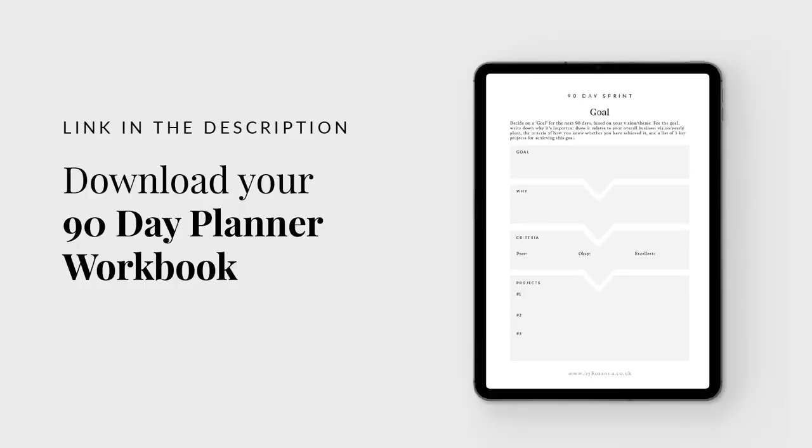So how do you structure your 90-day plan? If you're looking for something really easy, I've created a free workbook — it's 15 pages. You can download it and fill it out on your iPad or print it out. It's got everything you need: the 90-day reflection, looking back at past goals, and also setting up goals, projects, and action tasks, which I'll be talking through in a moment. It's completely free to download — the link will be in the description. Sign up and it will be automatically delivered to your inbox.